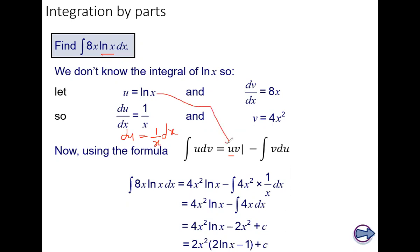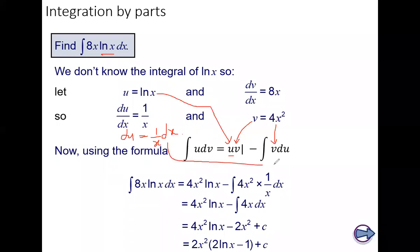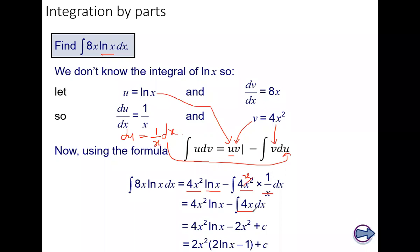This becomes your u which is ln(x), this becomes your v which is 4x², minus the integral of v times du. So v is 4x², minus integral of 4x² times (1/x) dx. Clearly you can see x cancelling, leaving 4x, and when you integrate 4x you get 2x² plus the constant of integration, plus C.